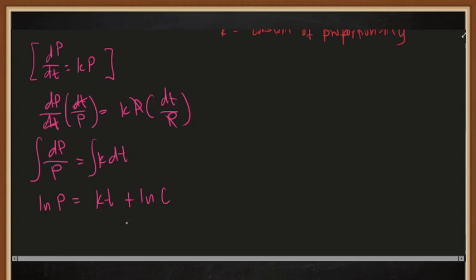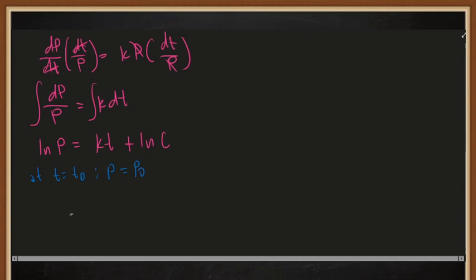To solve this, we need our initial conditions. For example, at t = t₀, our initial condition gives us p = p₀, the initial value of the population. We'll substitute this into our general solution.